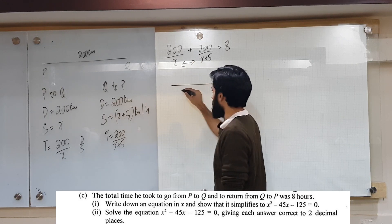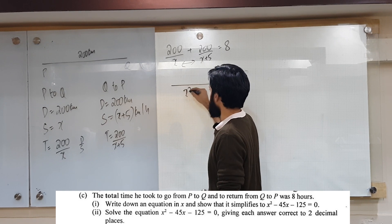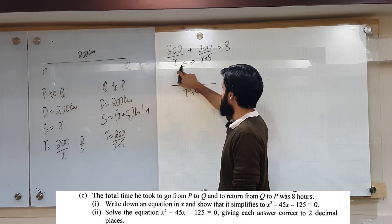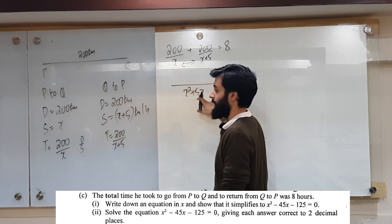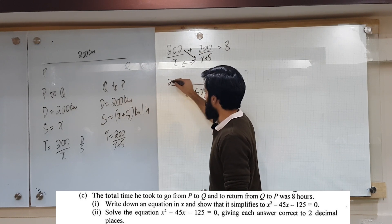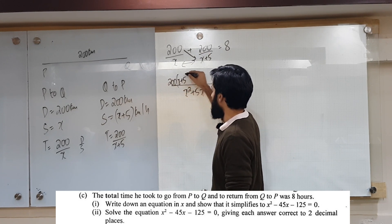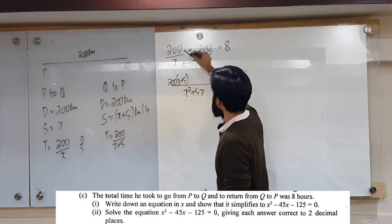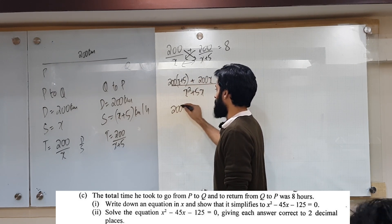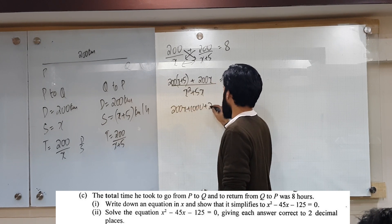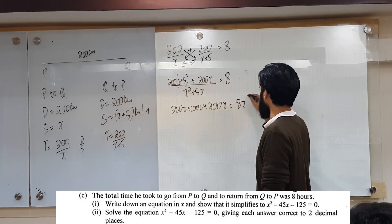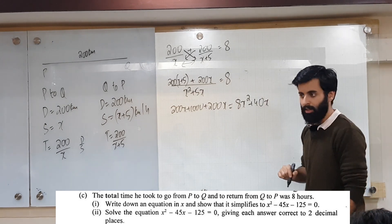We multiply the denominators together. x multiplied by x gives x squared, x multiplied by 5 gives 5x, so the common denominator is x squared plus 5x. On the numerator, 200 multiplied by x plus 5 stays in bracket form, and 200 multiplied by x gives 200x, equals 8. Opening the bracket: 200x plus 1000 plus 200x, and multiplying x squared plus 5x by 8 gives 8x squared plus 40x.